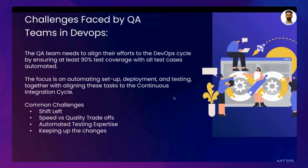The third challenge is automated testing expertise. With the emphasis on automation in DevOps, QA teams must possess strong skills in automated testing. This includes the ability to write, maintain, and understand automated testing scripts and frameworks. Developing this expertise requires time and training, which can be challenging especially in a fast-paced environment. The fourth challenge is keeping up with changes. In a DevOps culture, changes occur rapidly and frequently. QA teams must keep up with these changes in both the software being developed and the technologies used to develop and test it. This continuous learning and adaptation can be demanding.